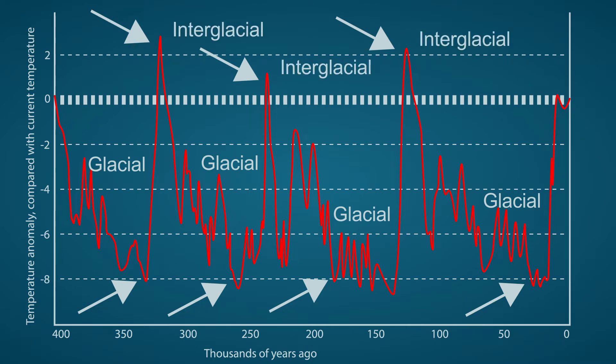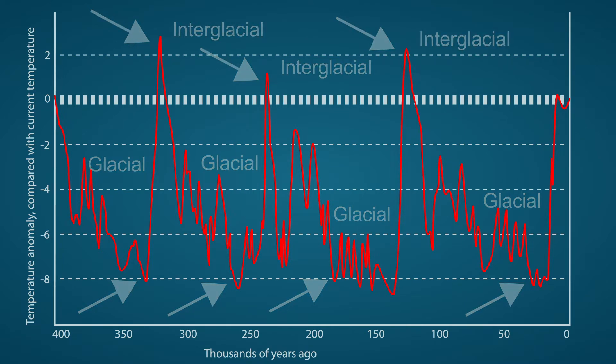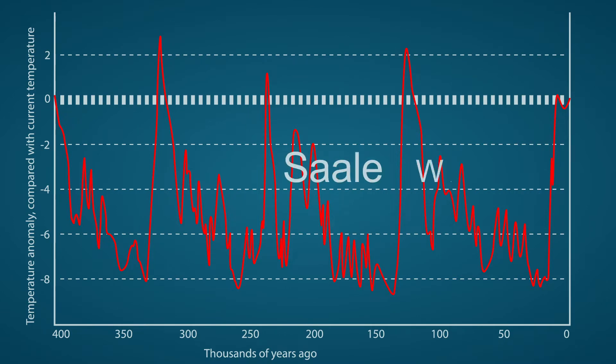The second last ice age is called the Sala glaciation. The last ice age is called the Weixalian glaciation. Both periods have had a lot of influence on the formation of the landscape in North-West Europe.